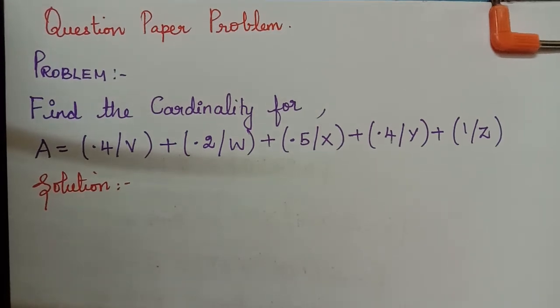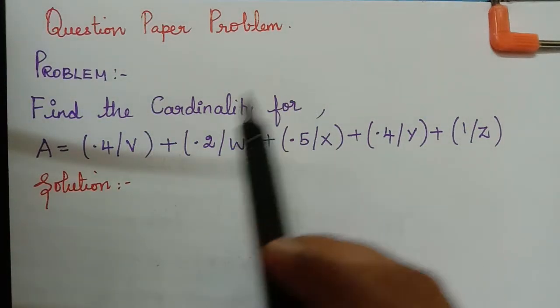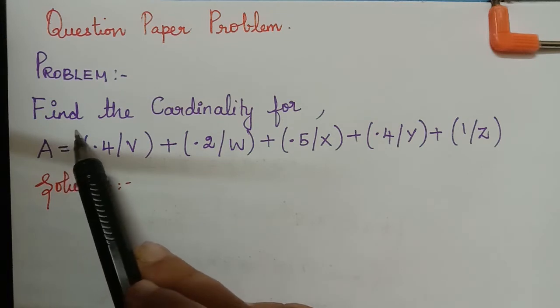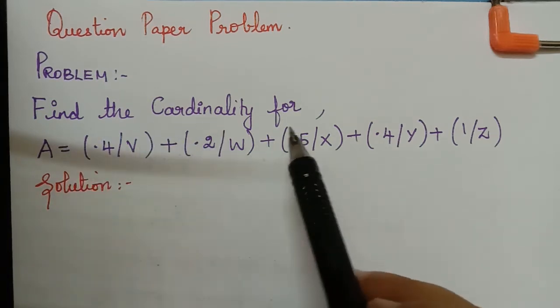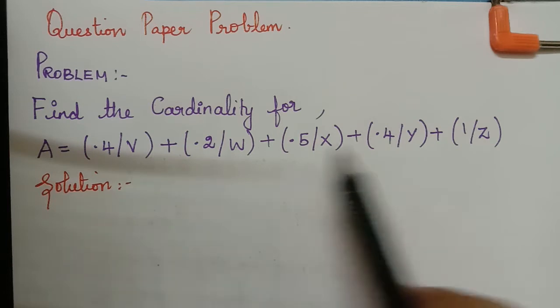Hello students, this is a problem that has appeared in a previous year question paper. The question is find the cardinality for the fuzzy set A equal to this.